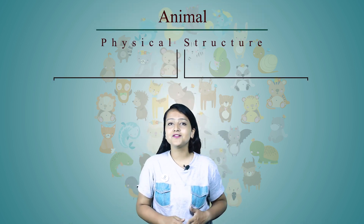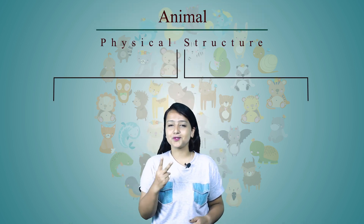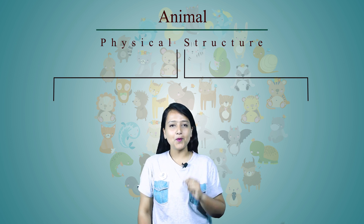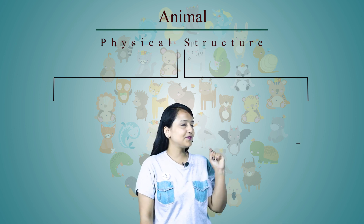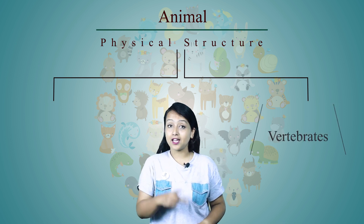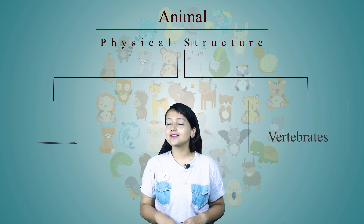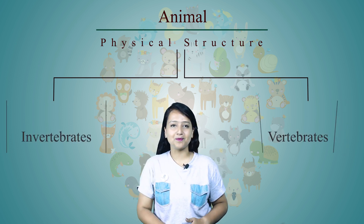There are different kinds of animals found around us. They are of different shape, size and physical structure. On the basis of their physical structure, animals are broadly divided into two types: number one is vertebrates and number two is invertebrates.